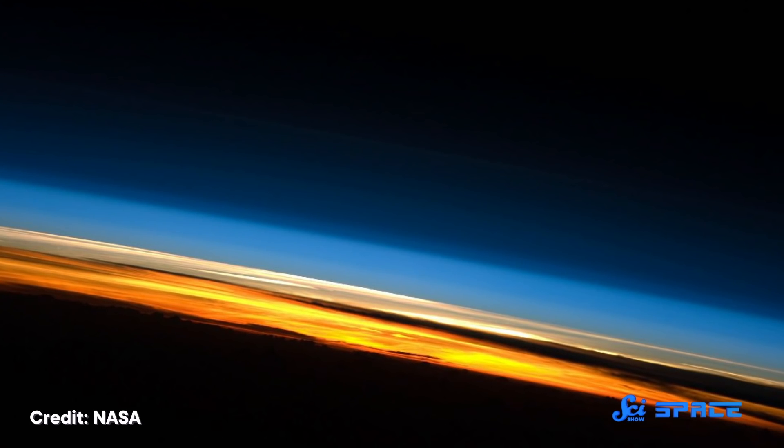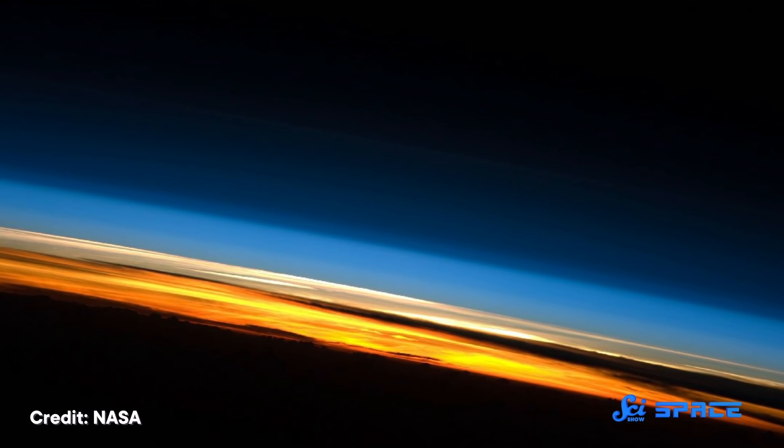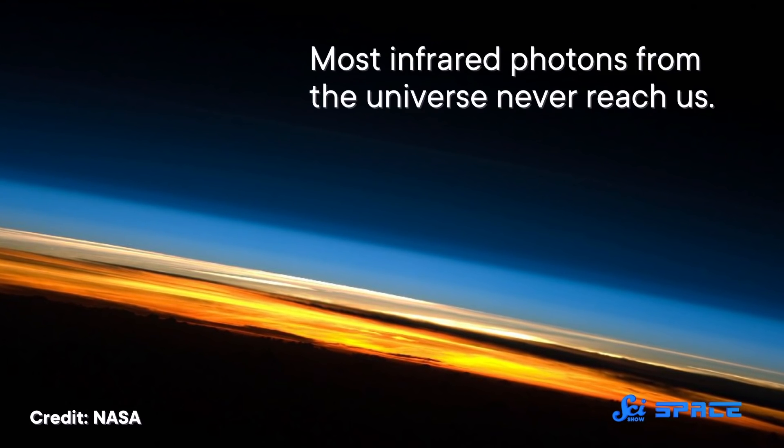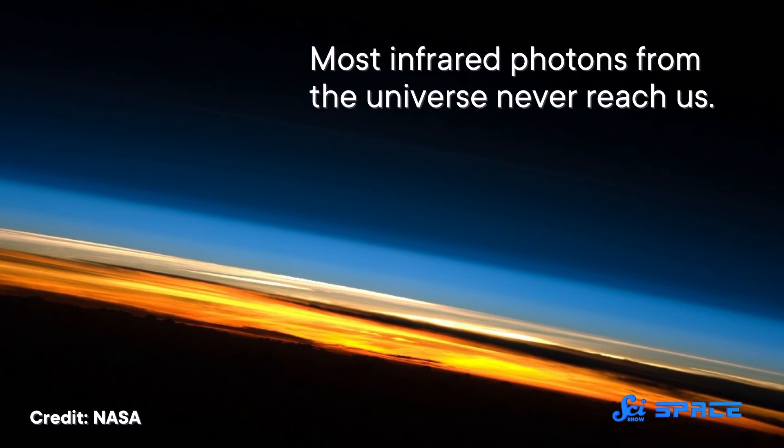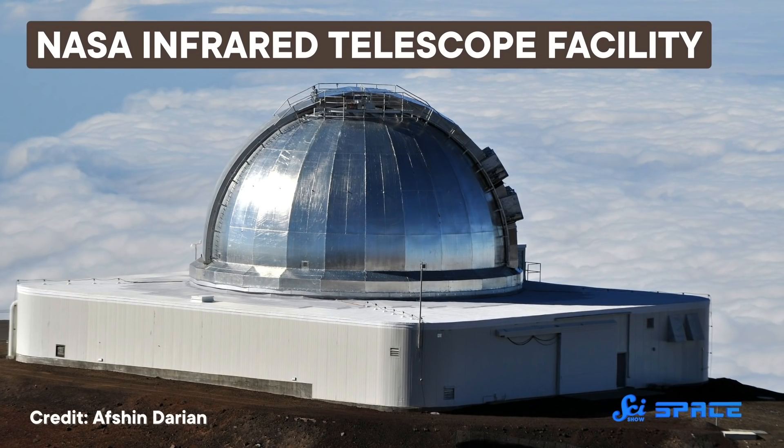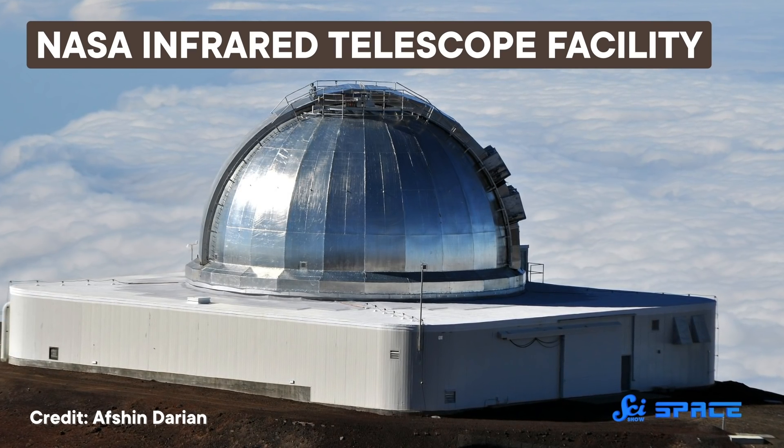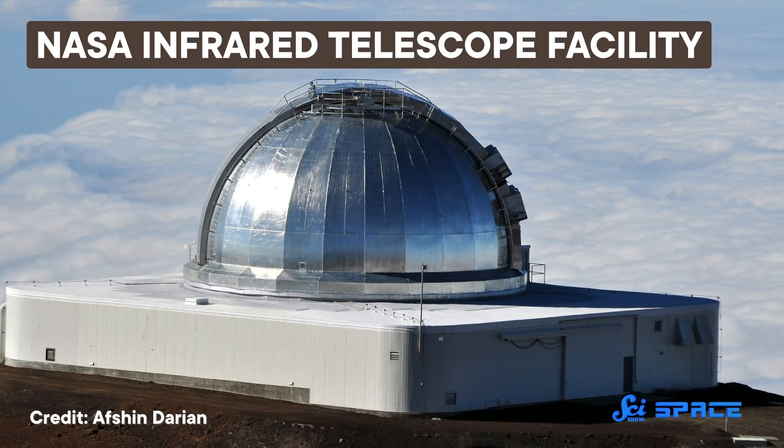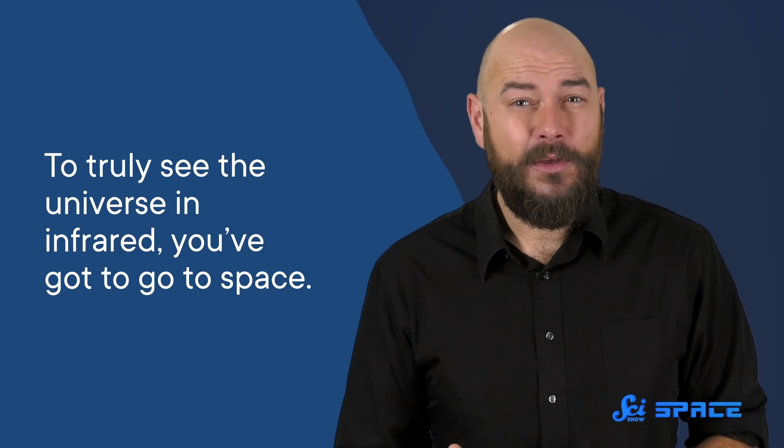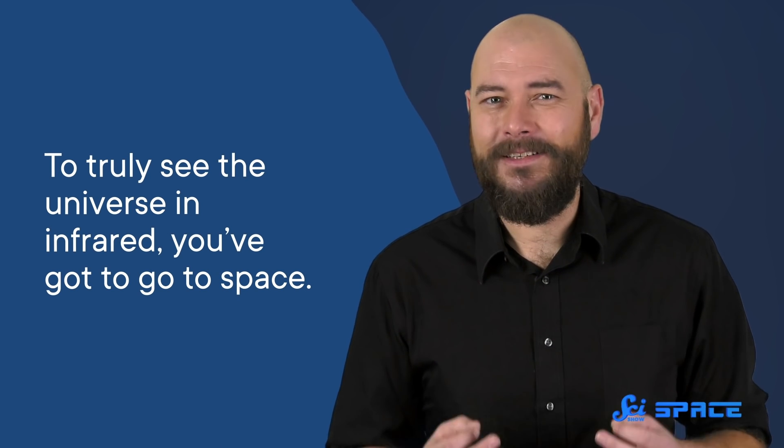In short, our pesky atmosphere. Water vapor and carbon dioxide are good absorbers of infrared, meaning that most infrared photons from the universe never reach us. Astronomers have done all they can to work around this, including putting infrared telescopes high on top of mountains and even aboard airplanes. But to truly see the universe in infrared, you've got to go to space.